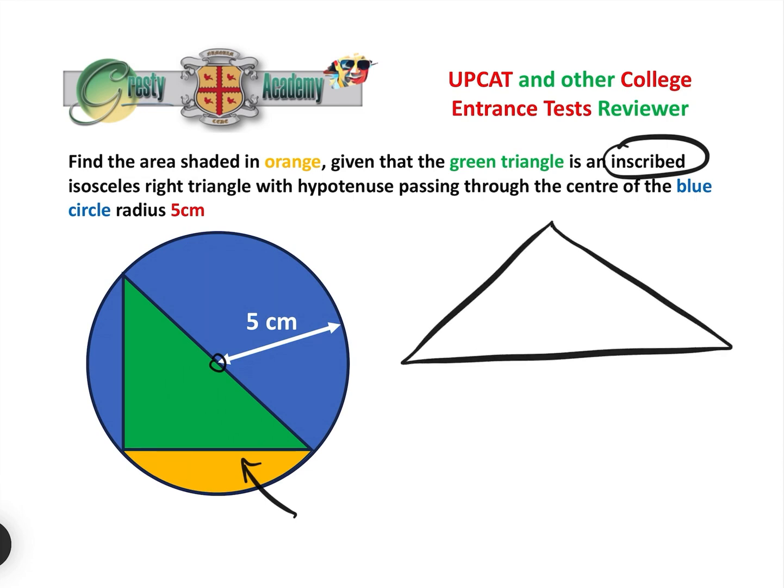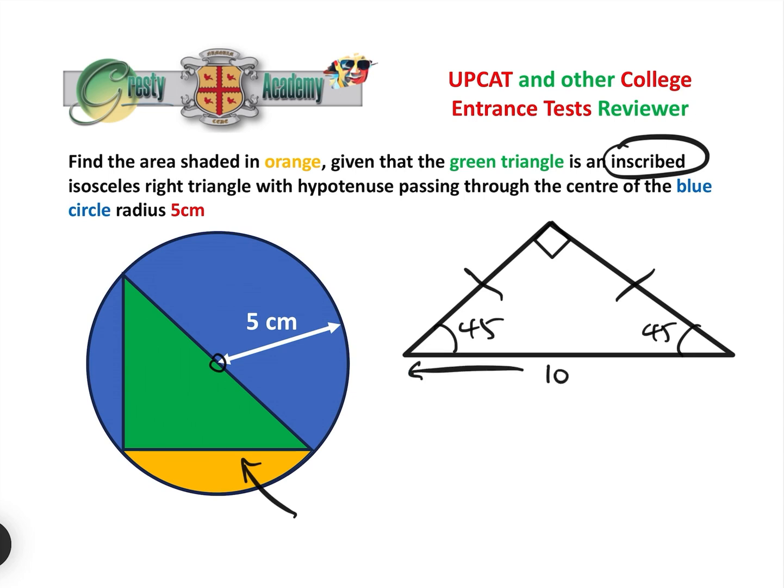Let's have a look at the isosceles right triangle first, because that's the most important bit. As it's a right triangle, we know that that is a right angle. We know therefore that these two angles are 45, because the sum of the angles in the triangle is 180. Now we know that this distance here is 10, because that is the diameter of the circle, and we're told that the isosceles triangle goes through the center of the circle.